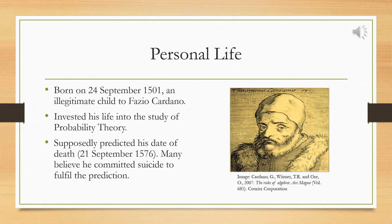Girolamo Cardano was born on September 24th, 1501, as an illegitimate child to Fazio Cardano, a mathematically gifted jurist, lawyer, and close friend of Leonardo da Vinci.